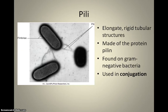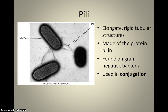Pili are essentially like sex organs. They're long tubular rigid protein structures made of a protein called pilin, which is why they're called pili. They're long tubes found in gram-negative bacteria — we'll discuss what gram-negative means later. It's important to note that gram-negative bacteria are typically pathogenic, which will be important to think about later.